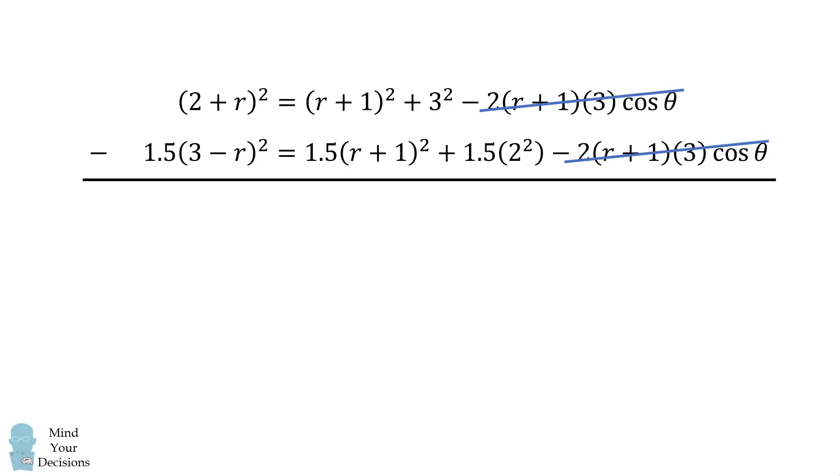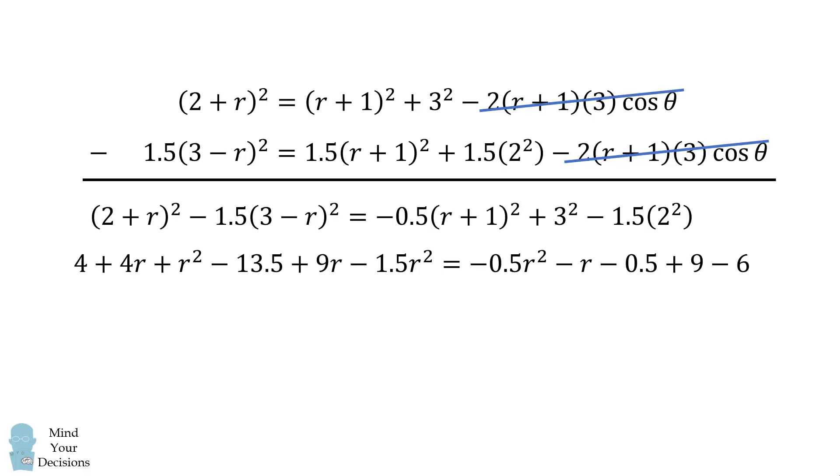When we subtract the second equation from the first, the cosine of theta terms will cancel out. We then get a single equation in one variable r. We do some careful simplification, and we get some magical cancellations. The result is that 14r is equal to 12, and therefore, r is equal to 6 over 7. And that's our answer.